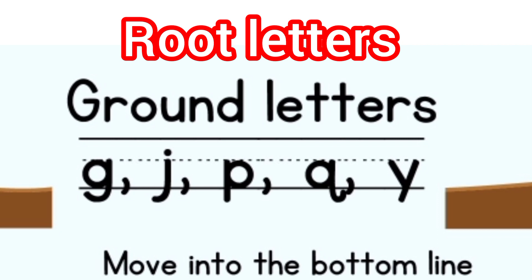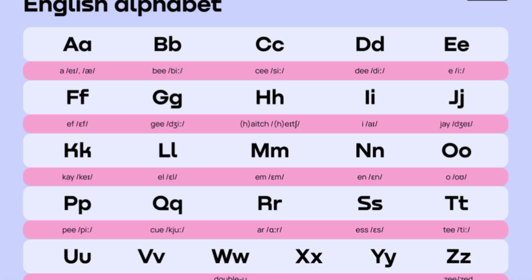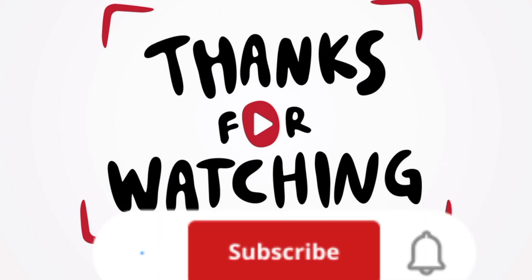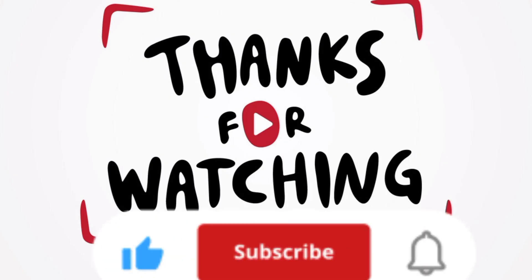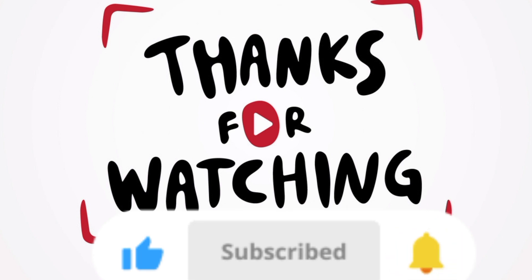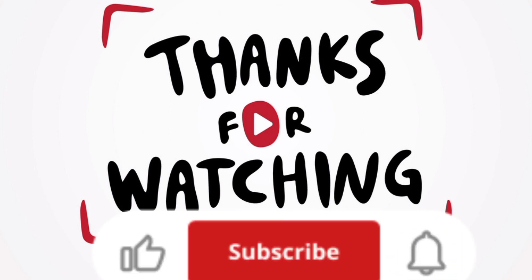They are also called ground letters. In this video we deeply learnt about the letters. This is the basic video of the language, because with the help of letters we will learn how to make words, and with the help of words we will learn how to make sentences. Thank you for watching — like and share the video, and click the bell icon so you will get the notification of the next video.